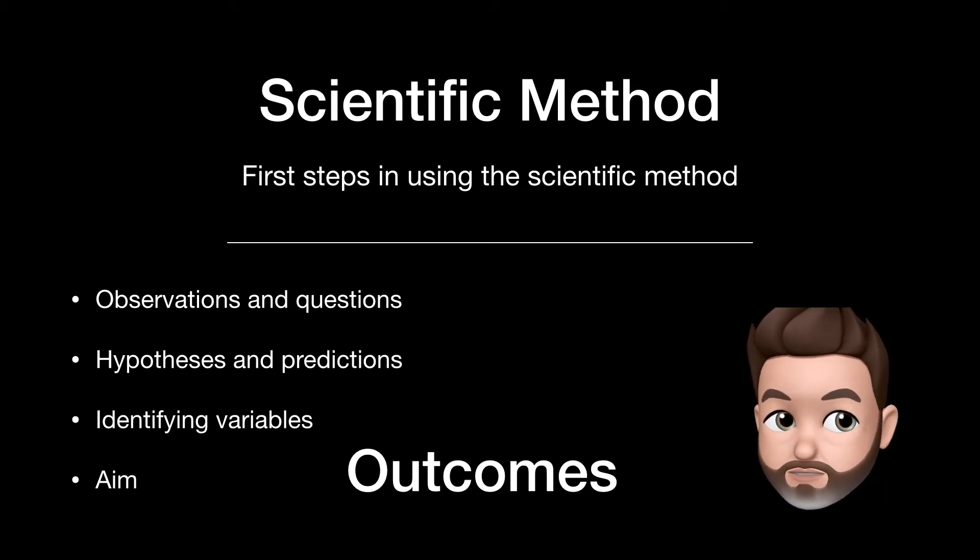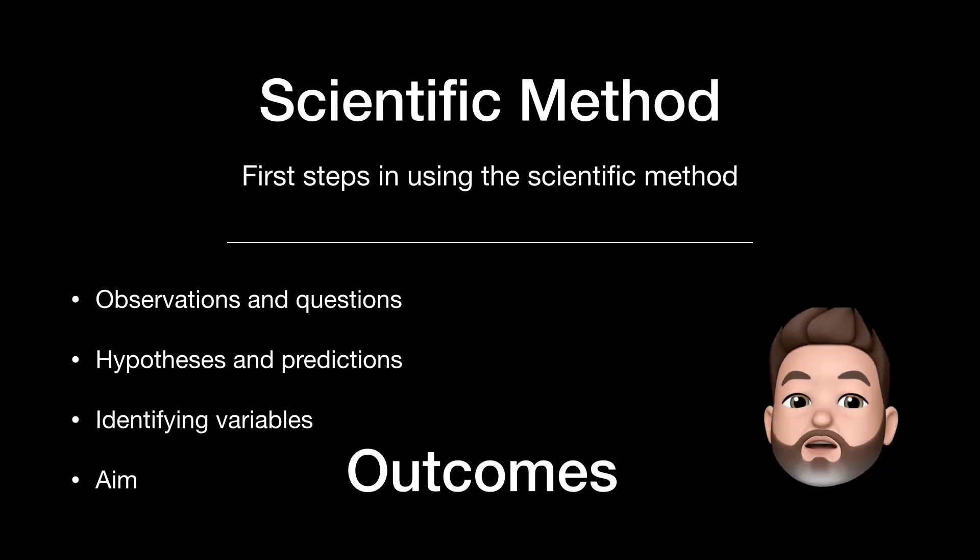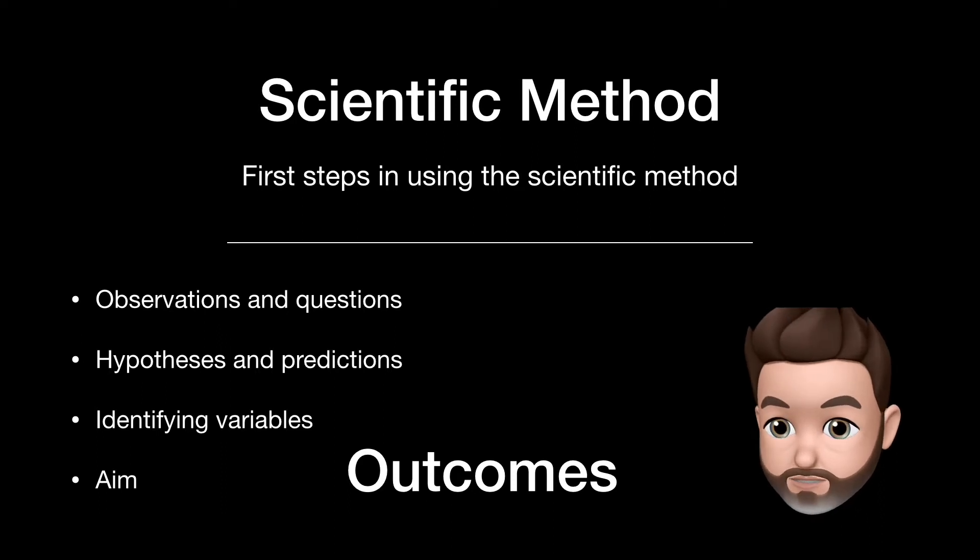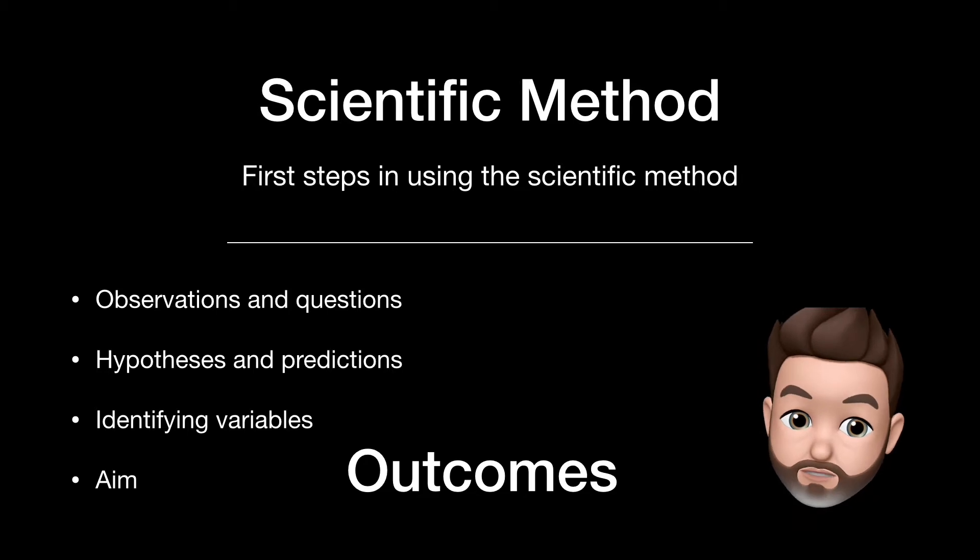I'm going to be talking about making observations and asking questions, and formulating hypotheses and predictions. We're also going to very briefly look at identifying different variables, the independent and dependent variables, and also look at what is the aim in a scientific investigation.